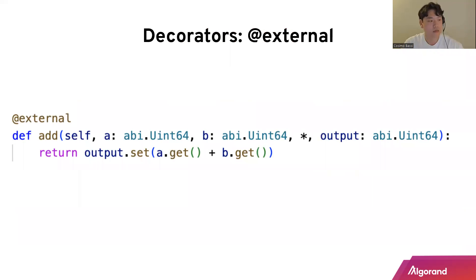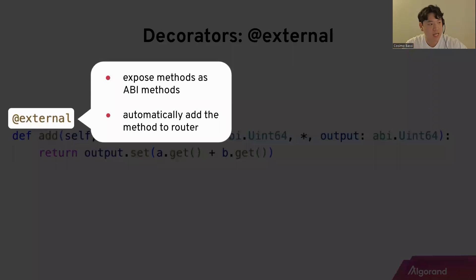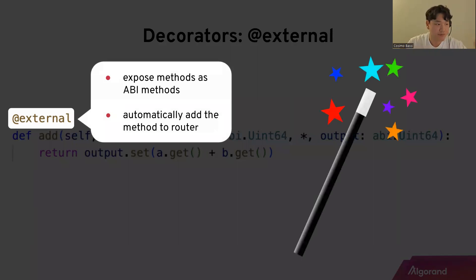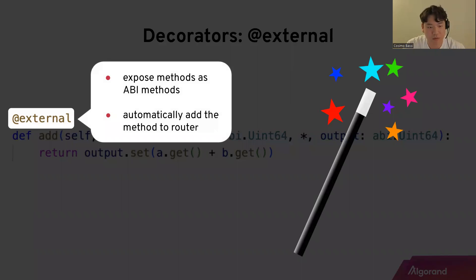Looking at the @external decorator: here we have an 'add' method with the external decorator. This exposes the add method to the ABI and handles all the routing so the frontend knows when to call this method. It's like magic — it abstracts away the router class and just does it for you, so you don't have to worry about connecting to the router.